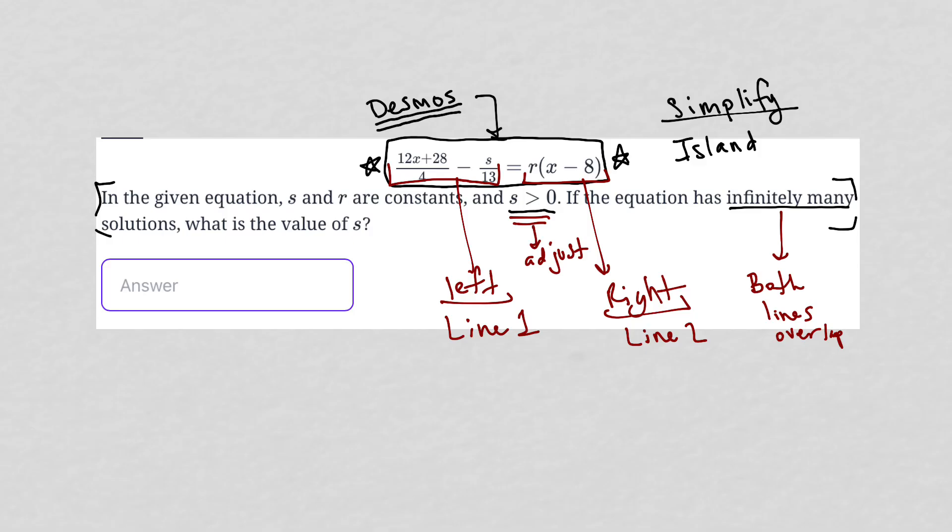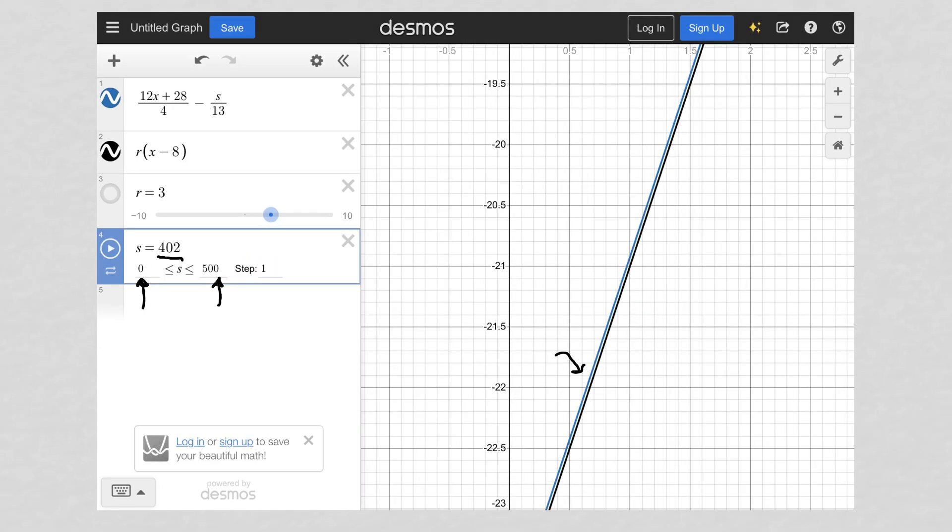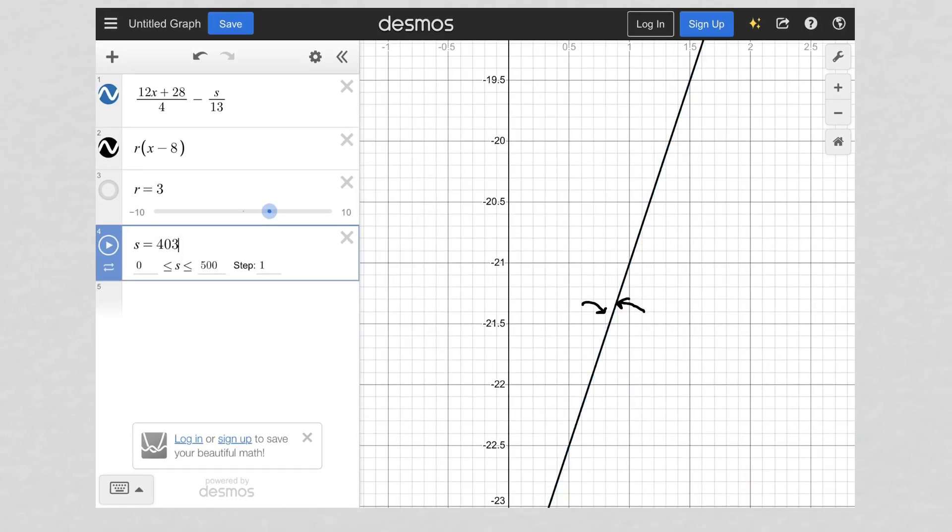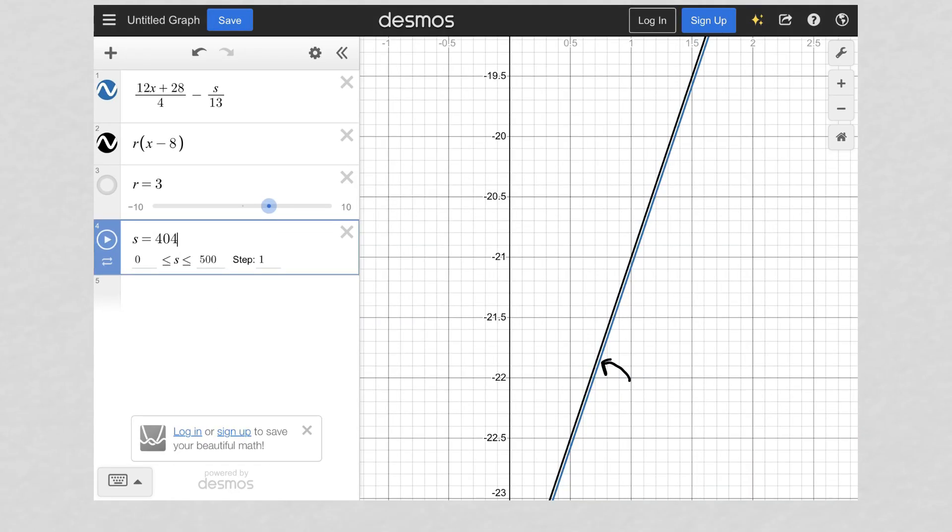And then Desmos does the rest of the work for us to figure out what S actually is. And for us, it ended up being 403. So you can also see my scale. I zoomed in very closely because you can imagine that, you know, if I'm zoomed out here, this is going to look like it's overlapped. But I really wanted to make sure that it truly was overlapped.